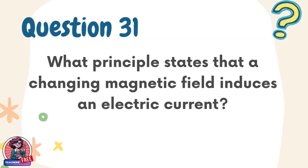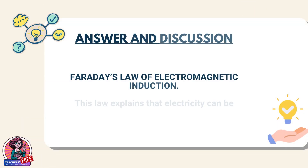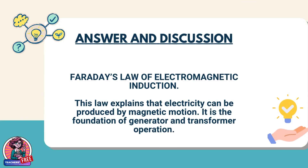Question 31. What principle states that a changing magnetic field induces an electric current? Answer: Faraday's law of electromagnetic induction. This law explains that electricity can be produced by magnetic motion. It is the foundation of generator and transformer operation.